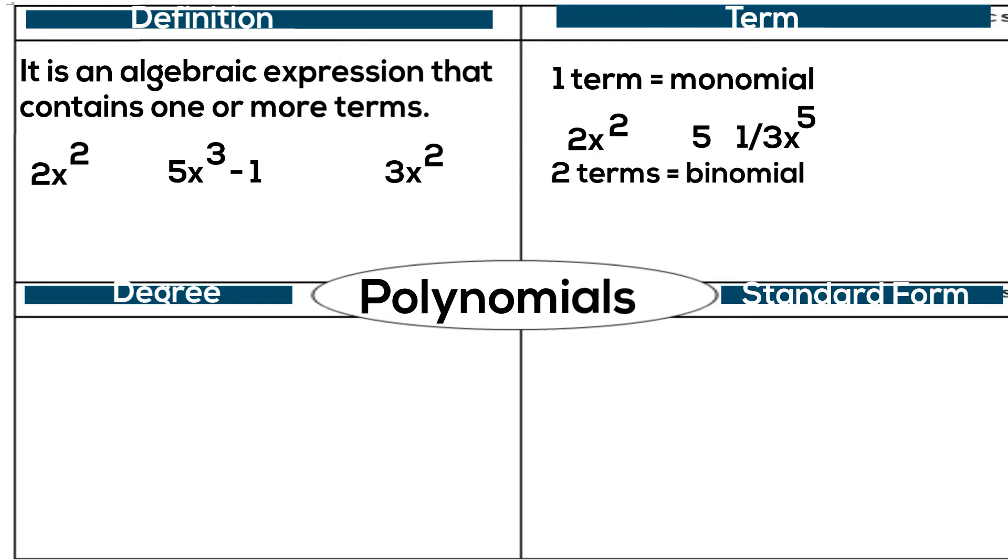Two terms is called a binomial. Some examples may be 2x squared plus 1, 5x minus 5x cubed. With a binomial, you are adding and subtracting two terms.